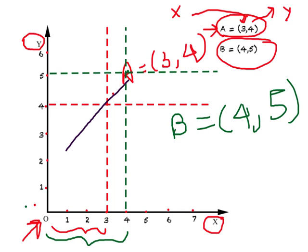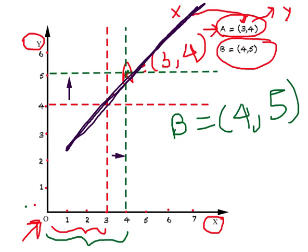We can join points like A and B, and what we get is a line or a curve. Note that this line is rising up, or upward sloping. What this means is: as you increase the value of X, the value of Y increases as well, and if you reduce the value of X, the value of Y will fall. In other words, both variables X and Y move in the same direction.